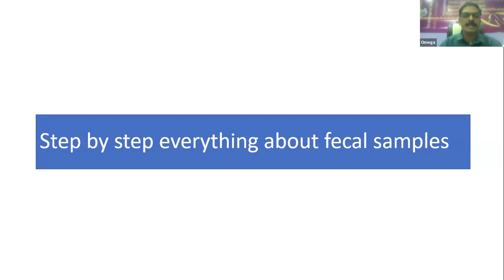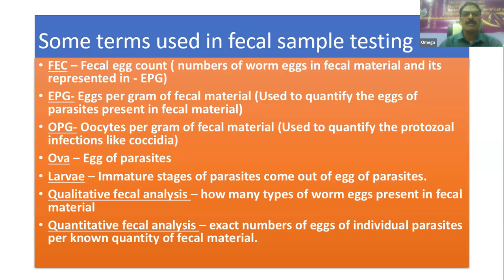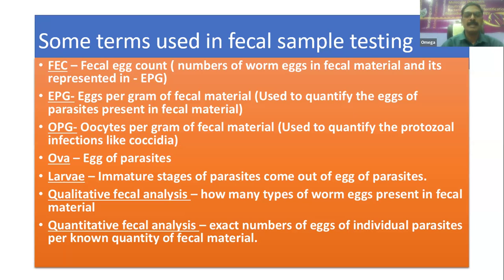Now we can see a step-by-step approach to fecal sample examination. Before that, we should know some terms used in fecal sample examination testing. The fecal egg count — the number of worm eggs present in the fecal matter — is represented by EPG, meaning eggs per gram of fecal sample. OPG means oocysts per gram of fecal sample, representing the number of protozoal oocysts. OVA is the egg of a parasite; larva is the immature stage of the parasite that comes out of the eggs. Qualitative fecal analysis means identifying the different worm eggs present; quantitative fecal analysis means determining the exact number of eggs of different parasite types present in that particular animal.